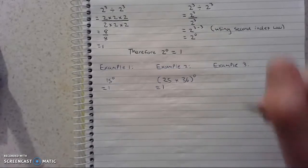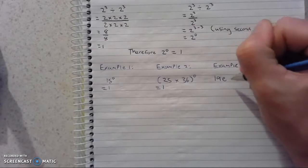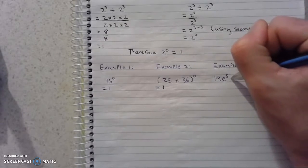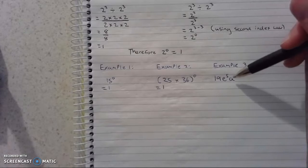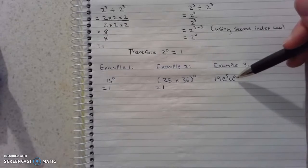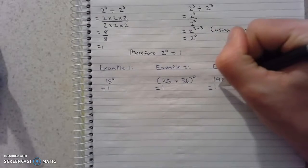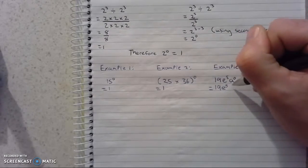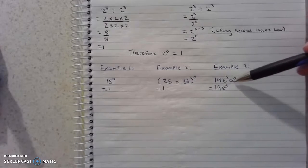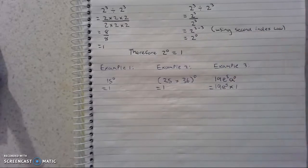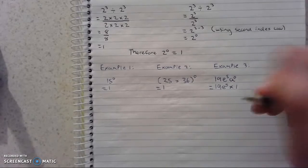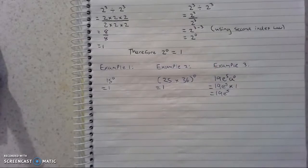We'll do something a little bit different as well. If we have 19e to the power of 5 times a to the power of 0, we know that a to the power of 0 is equal to 1. So this can be written as 19e to the power of 5 — and since two variables next to each other means multiplication — that's times 1. And 19e to the power of 5 times 1 is just 19e to the power of 5.